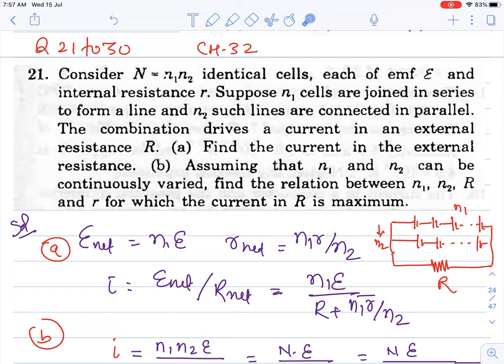Each resistance divided by number of branches. So this parallel we can see by first doing series then parallel: n₁r/n₂. This net internal resistance is in series with external resistance. Net internal resistance is always in series with the net external resistance.